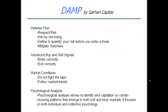The A stands for advanced buy and sell signals, which is the topic for this evening — we want to enter and exit correctly. The M stands for market conditions; the goal is to align yourself with what is actually happening in the market, follow trends, and let the market guide you. The P stands for psychology — one of the most important factors. Beyond fundamental and technical analysis, the missing link is psychological analysis for studying markets.